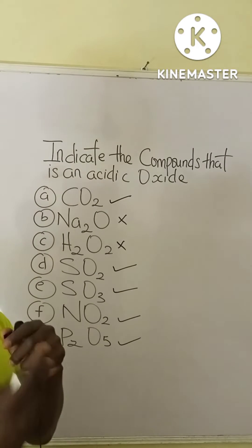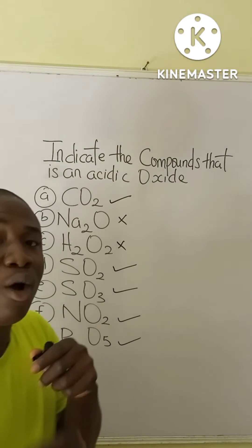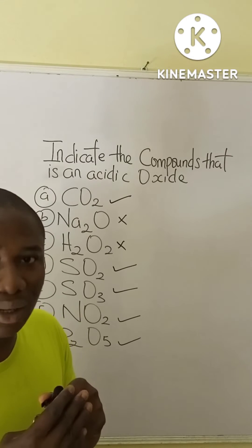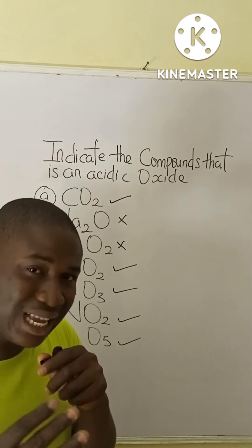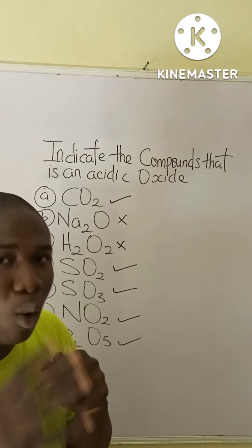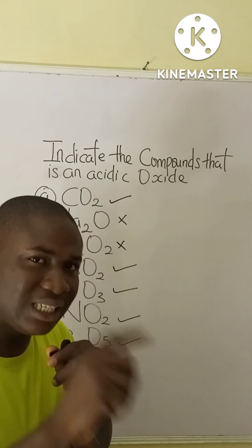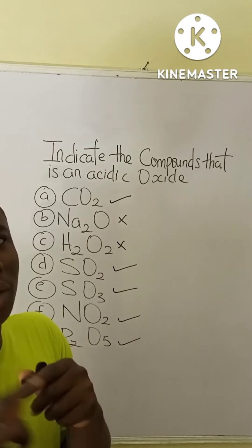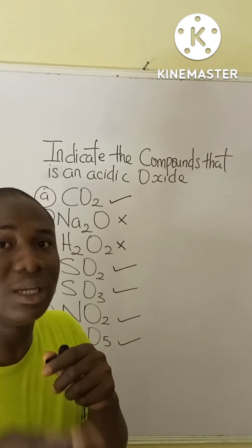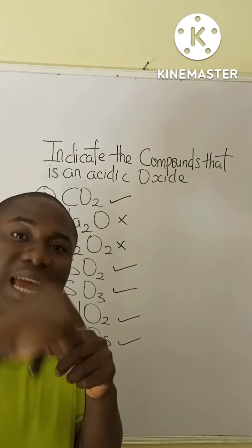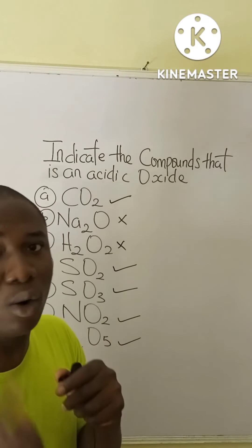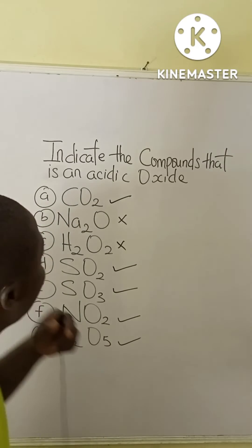What is an acidic oxide? An acidic oxide is a compound containing oxygen with a non-metal. This means that for an acidic oxide to be formed, we need a non-metal combined with oxygen.